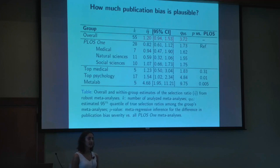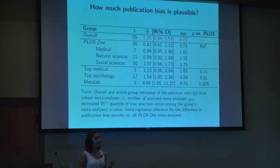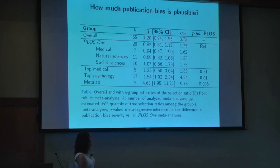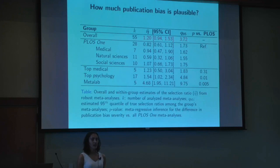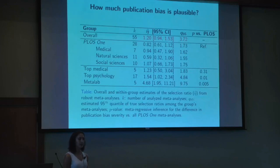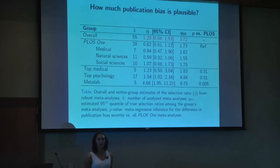We conducted a meta-analysis of meta-analyses across a range of disciplines to empirically estimate the selection ratio and benchmark plausibility. Across all these sources, affirmative results were actually only about 20% more likely to get published than non-affirmative results. Even looking at the 95th quantile of selection ratios, it was typically less than four or five. So a selection ratio of 30 — what we got from our violent video games analysis — is quite large and not really plausible. We might therefore say the meta-analysis is fairly robust.